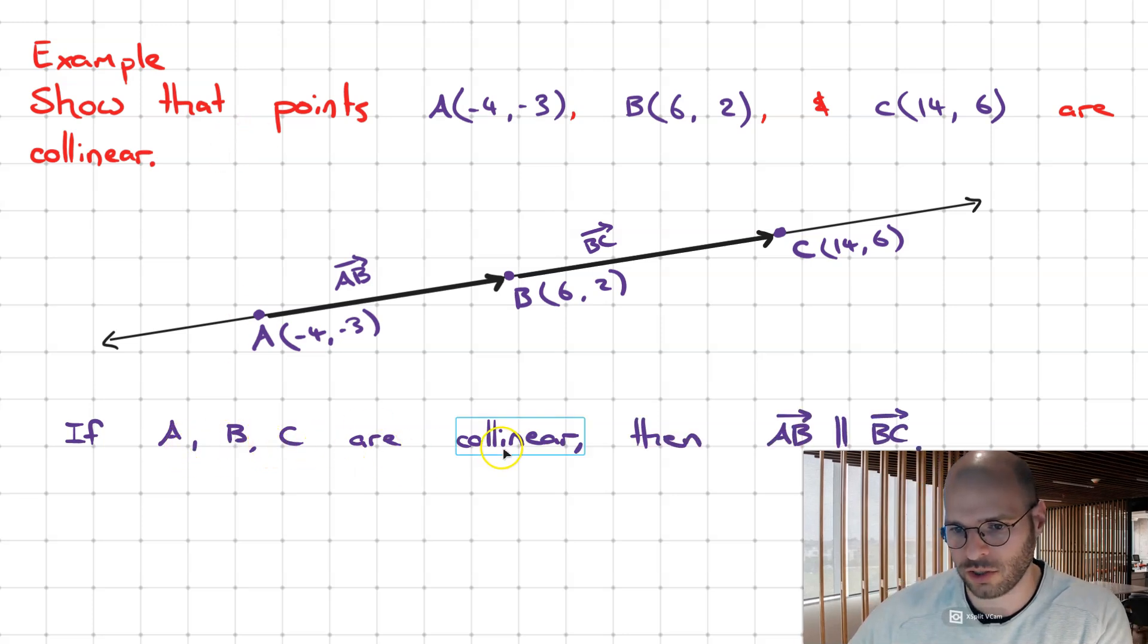if points A, B and C are all collinear, then the vectors AB and BC are going to be parallel. So all we need to do to show that these points are collinear is prove this relationship here.